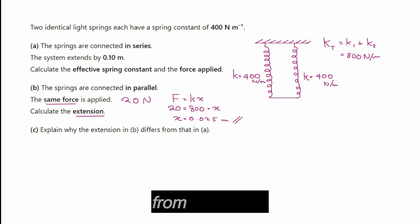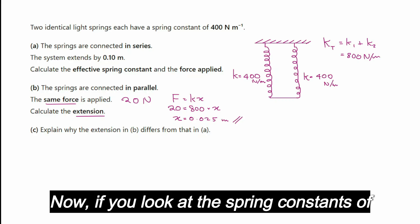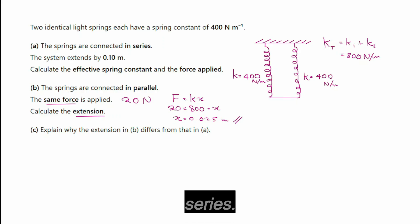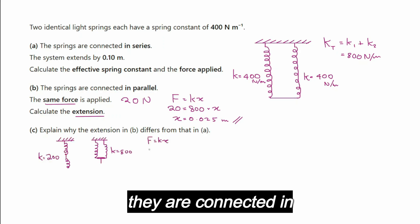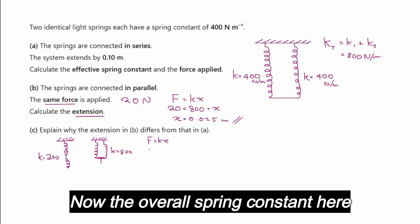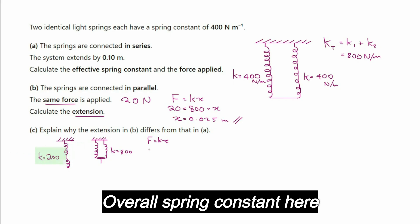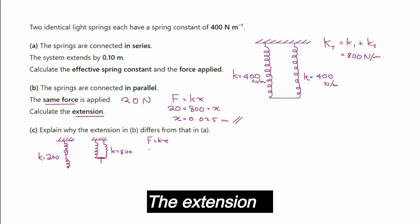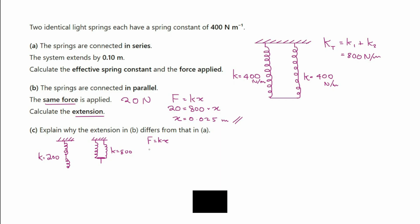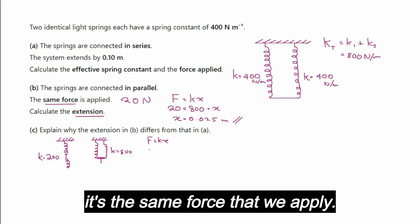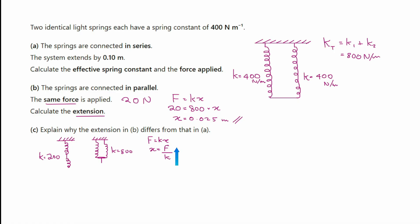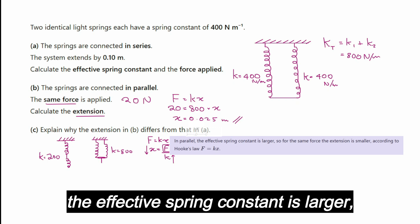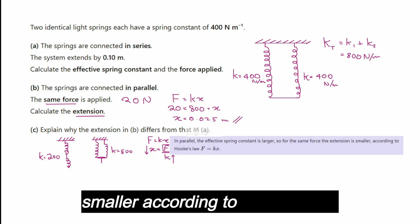Part c asks why the extension in b differs from part a. In situation a, springs are in series giving an overall spring constant of 200 N/m; in situation b, springs are in parallel giving 800 N/m. Since extension equals force divided by k, and the same force is applied, the higher the spring constant the smaller the extension. In parallel, the effective spring constant is larger, so for the same force the extension is smaller according to Hooke's law.